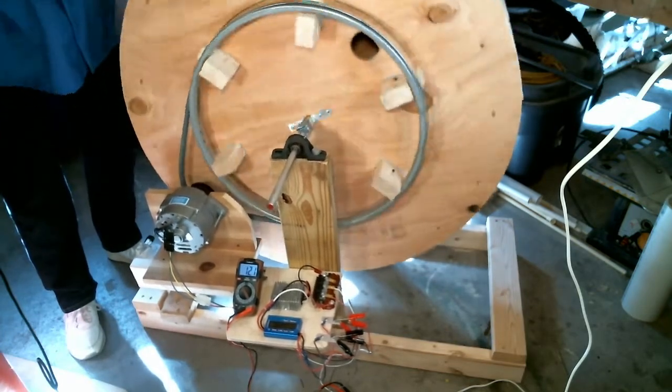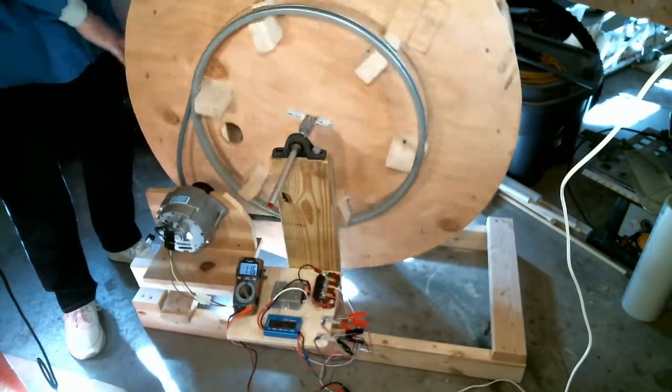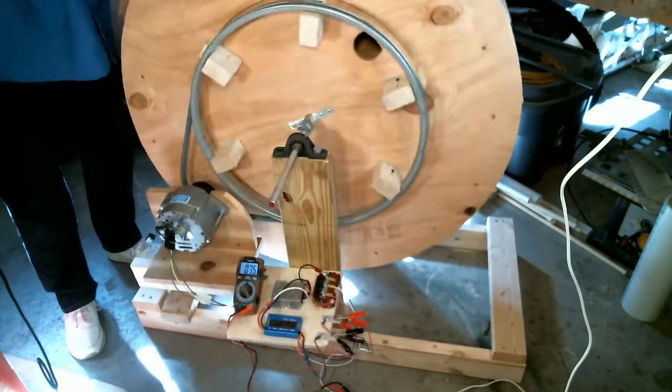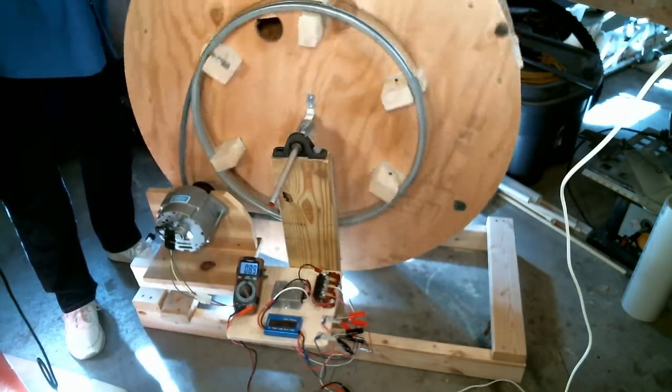As I spin the water wheel you can see it generates electricity, and the question is can I get this wheel to spin fast enough with the current configuration to generate electricity using running water.